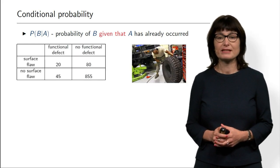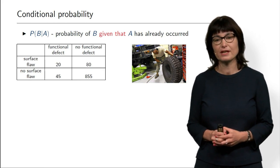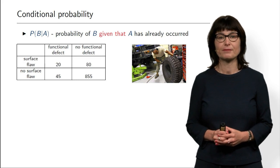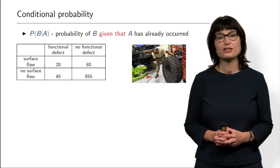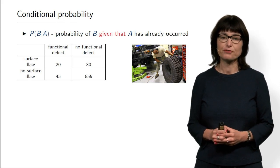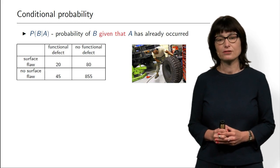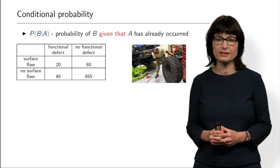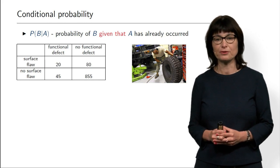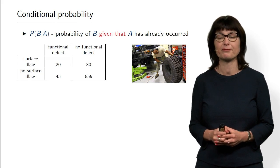Let us immediately consider an example. Assume that this workshop is working with used tires. A mechanic is checking the tires. Some tires have flaws — some have surface flaws and some have functional defects. We have 1000 tires and here in the table is a distribution. Some of them have defects, some don't. Most don't have any defect. Some have both, some have one.